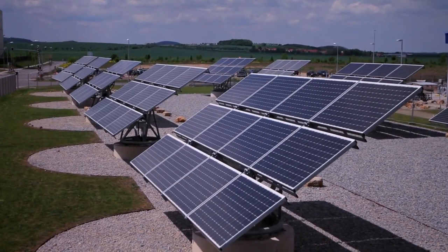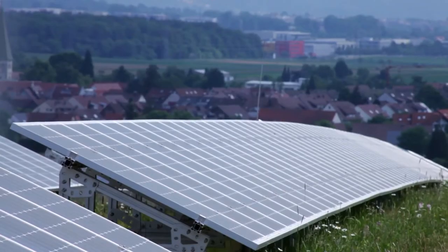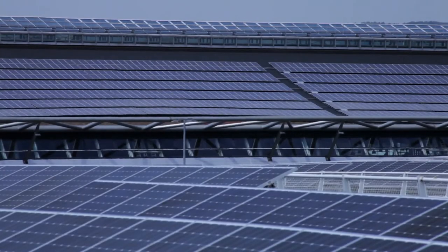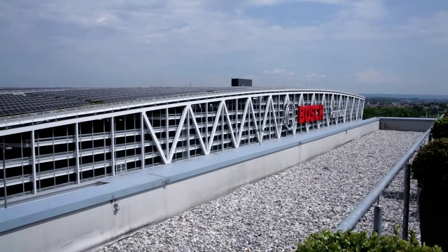As a result, they are protected from the elements for more than 25 years. One solar module contains 60 cells. When a number of modules are connected to one another, a solar power plant is created.